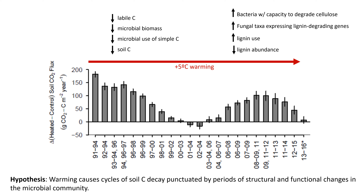I'll quickly summarize the working hypothesis for what might be driving this cyclic pattern. Warming causes cycles of soil carbon decay punctuated by periods of structural and functional changes in the microbial community, which then leads to another phase of enhanced respiratory response due to warming. In the first wave or first phase of respiration, we see a reduction in labile carbon, a decline in microbial biomass, a decline in microbial use of simple carbon substrates, and an overall loss of about 17% of the total soil carbon stock.